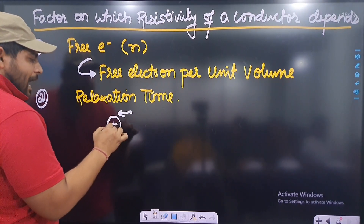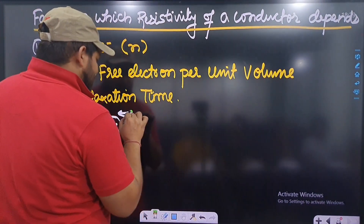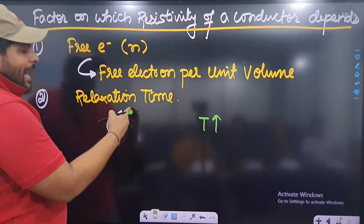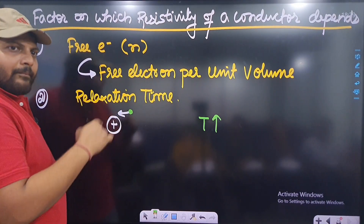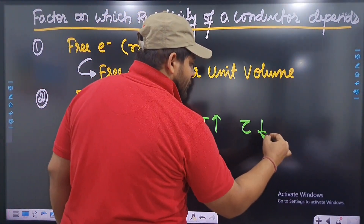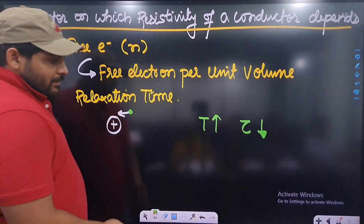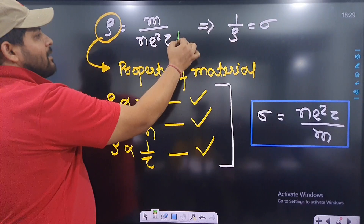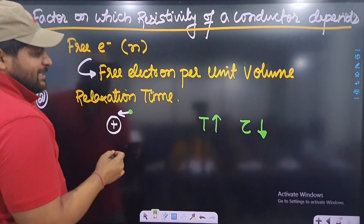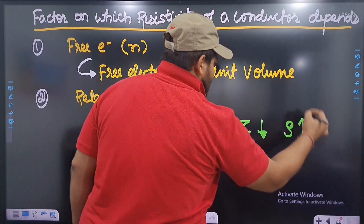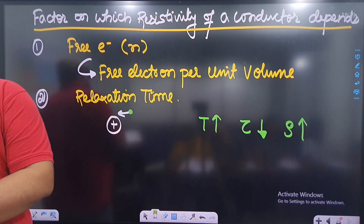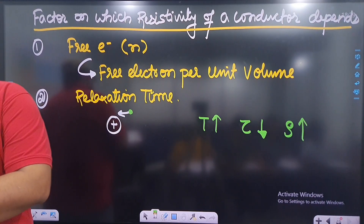Relaxation time is the time between successive collisions of an electron with ions. If temperature increases, the ions vibrate more, collisions become more frequent, so the time between collisions — relaxation time τ — decreases. If τ decreases, resistivity increases. So indirectly, increasing temperature increases resistivity of a conductor.